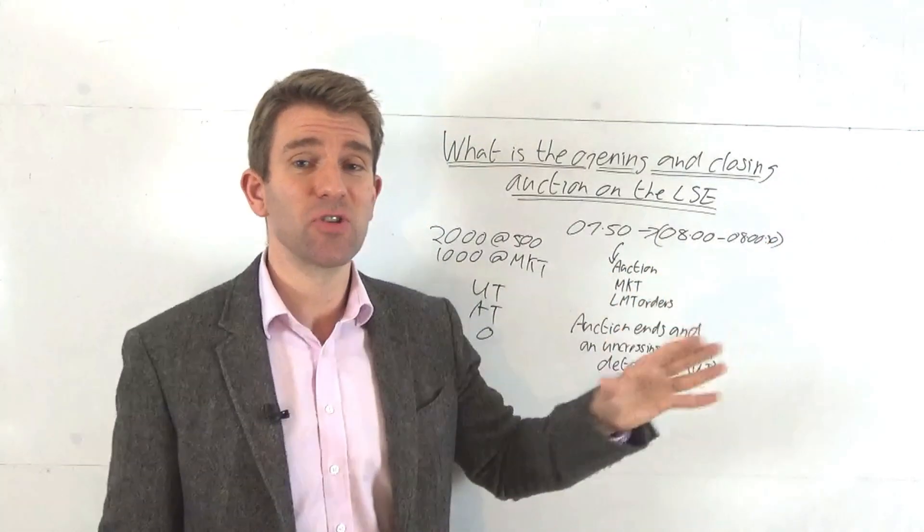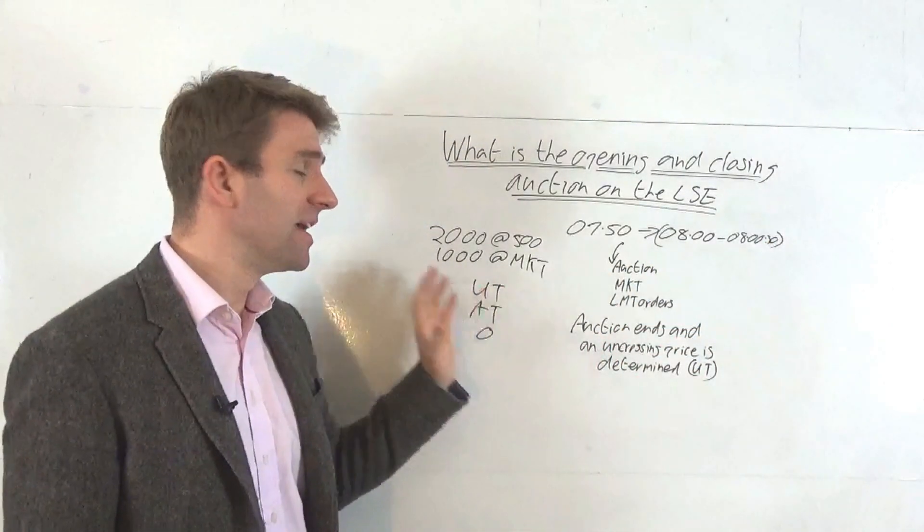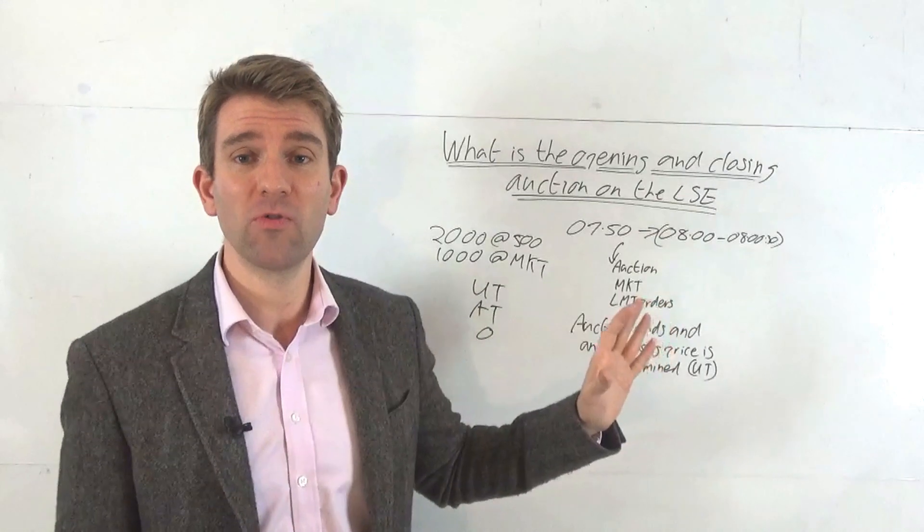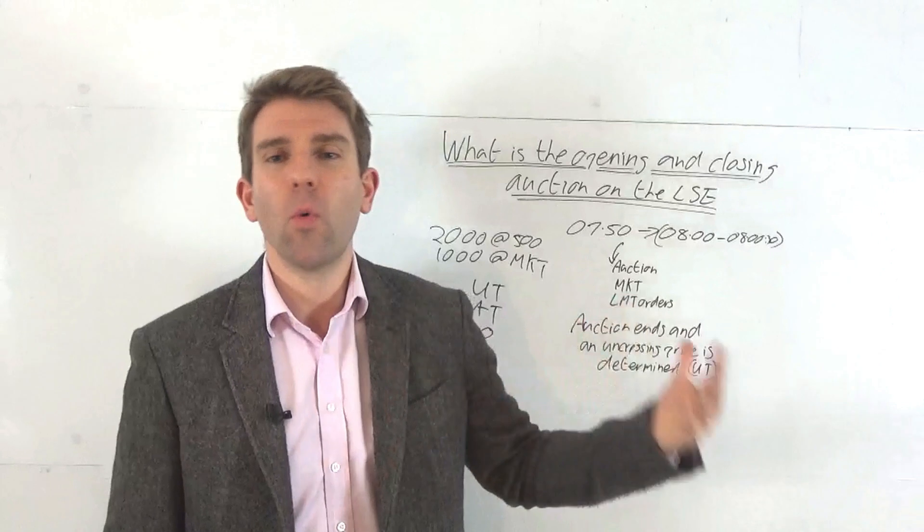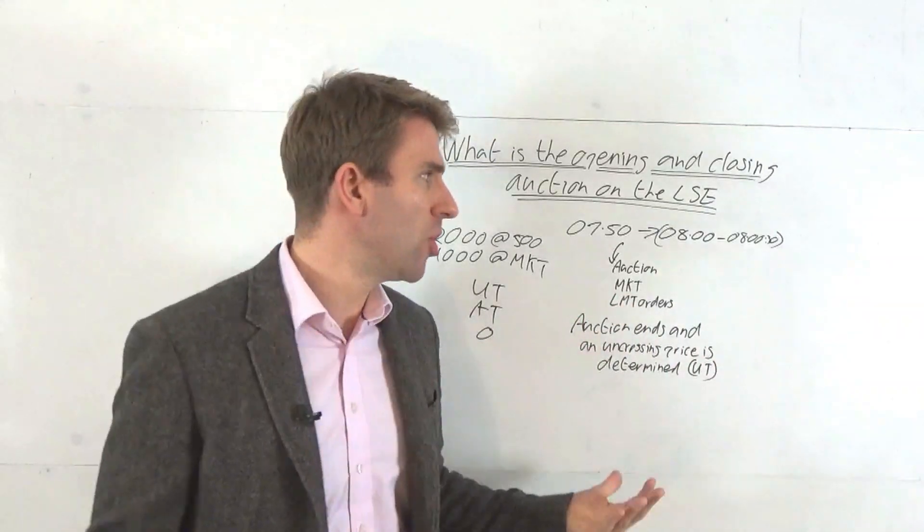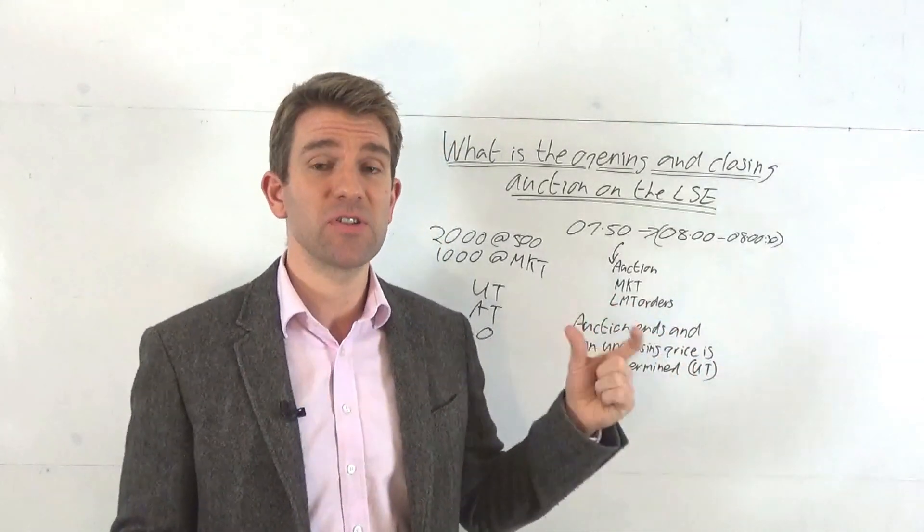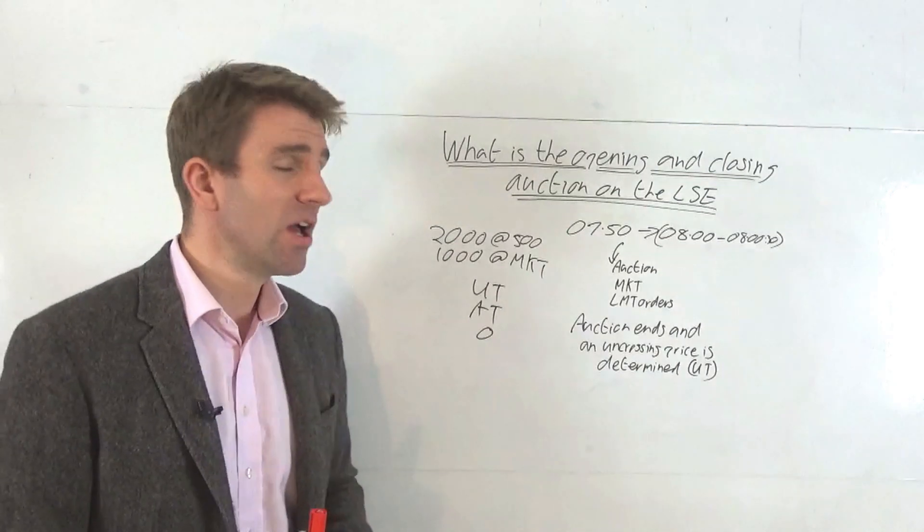The randomized timing is pretty clever to stop someone gaming the system. You can see if someone put a massive market order in, that would change the uncrossing price and might affect some additional trade they've got. You don't want it open to manipulation, same with the close. That 30-second randomized period really eliminates that.